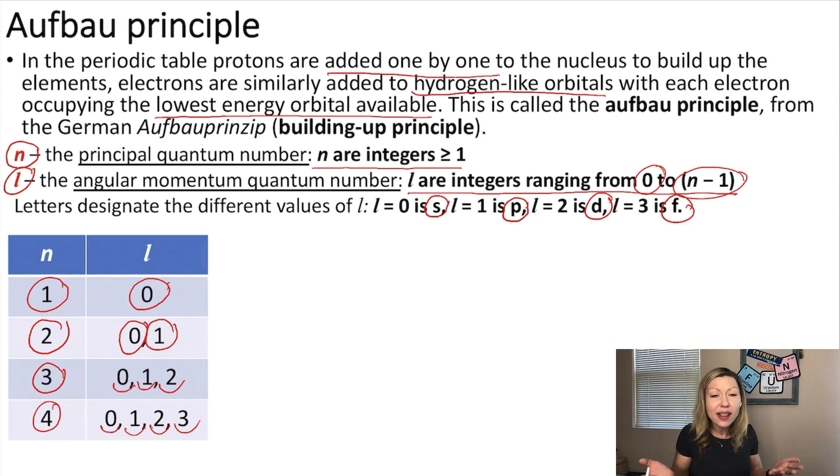What is the connection between the electron configuration and all these numbers? When n equals one and l equals zero, I'm going to have a 1s orbital. When n equals two and l equals zero, I'm going to have a 2s orbital. When n equals two and l equals one, I'm going to have a 2p orbital. I can have a 3s, 3p. Can I have a 3d orbital? Yes, because when n equals three, l can be also two, which is the d orbital.